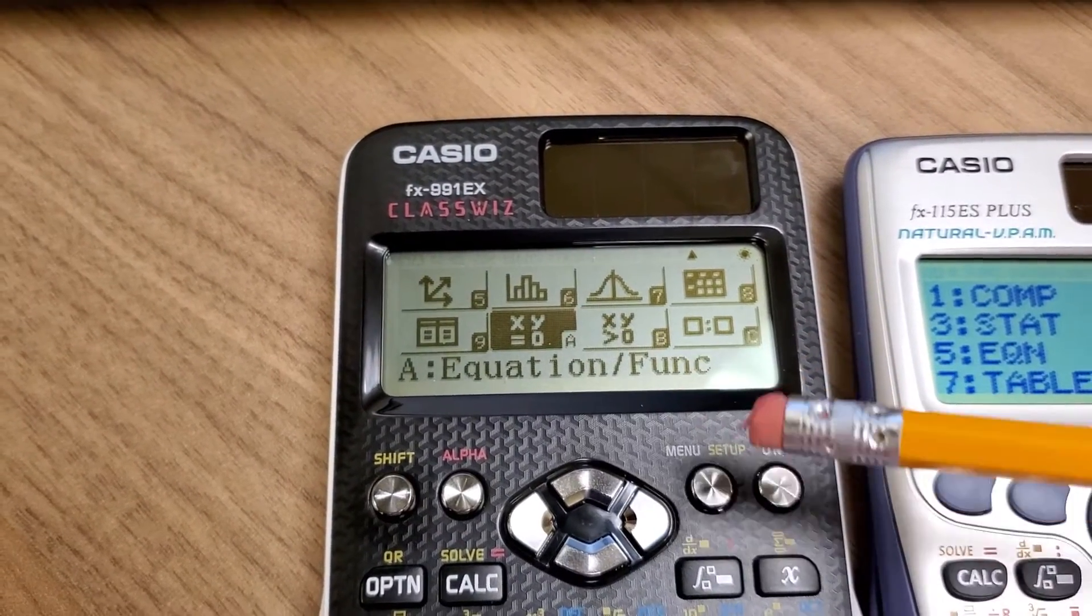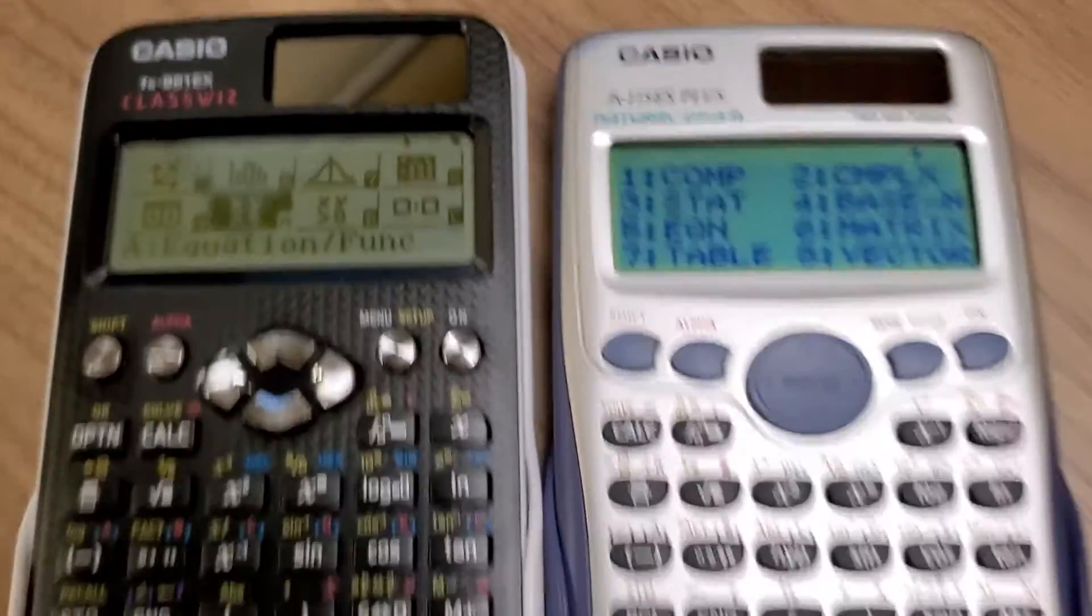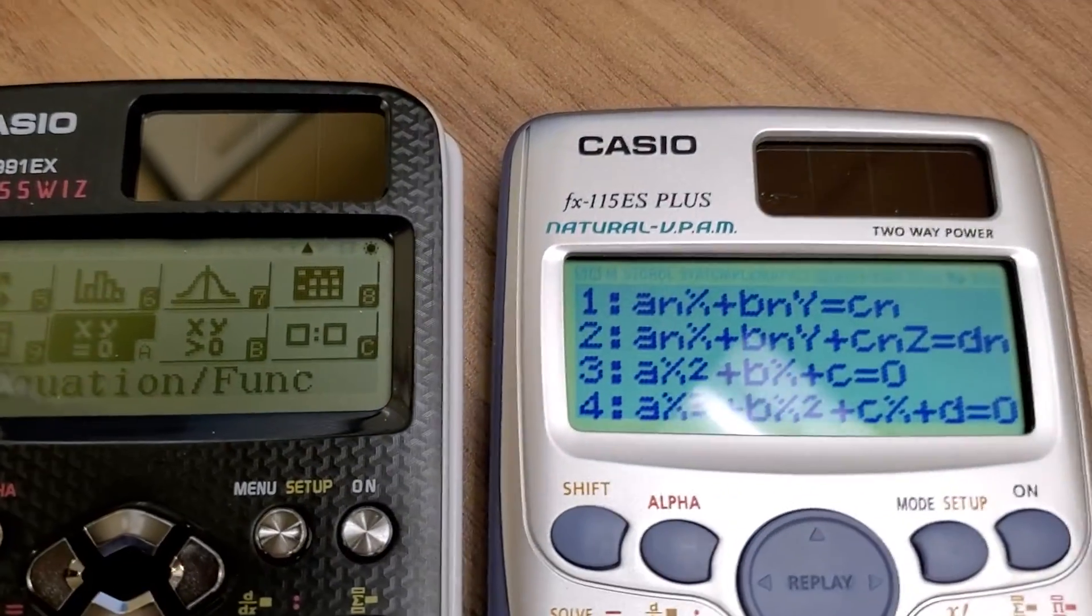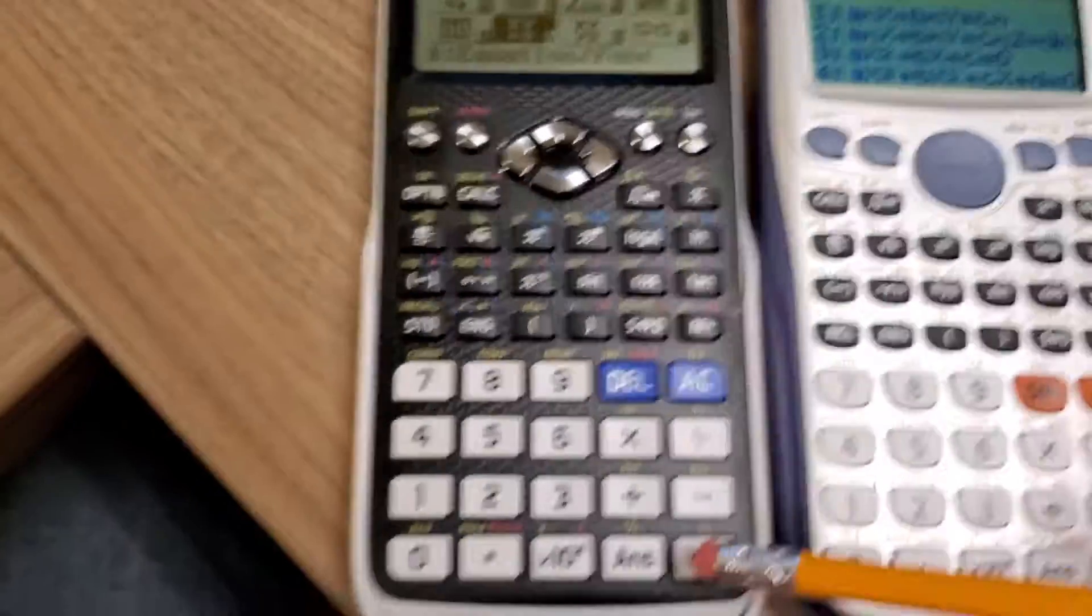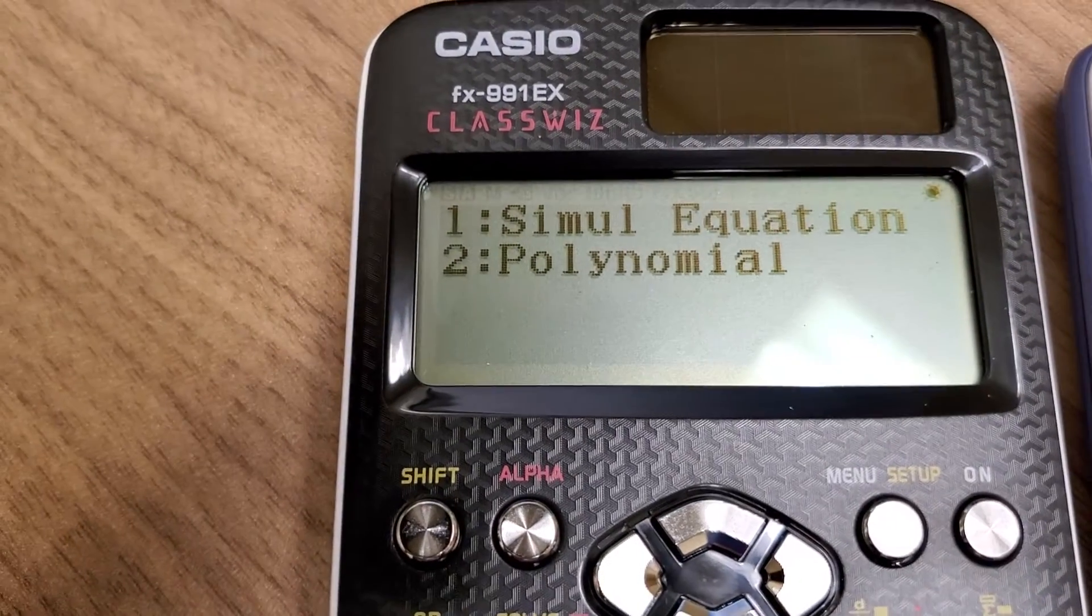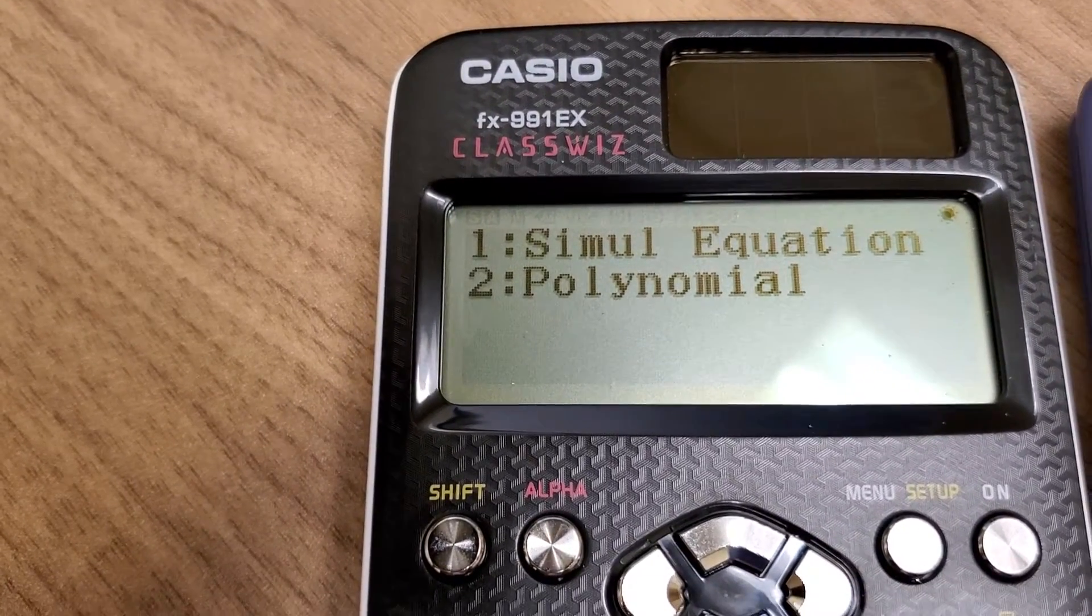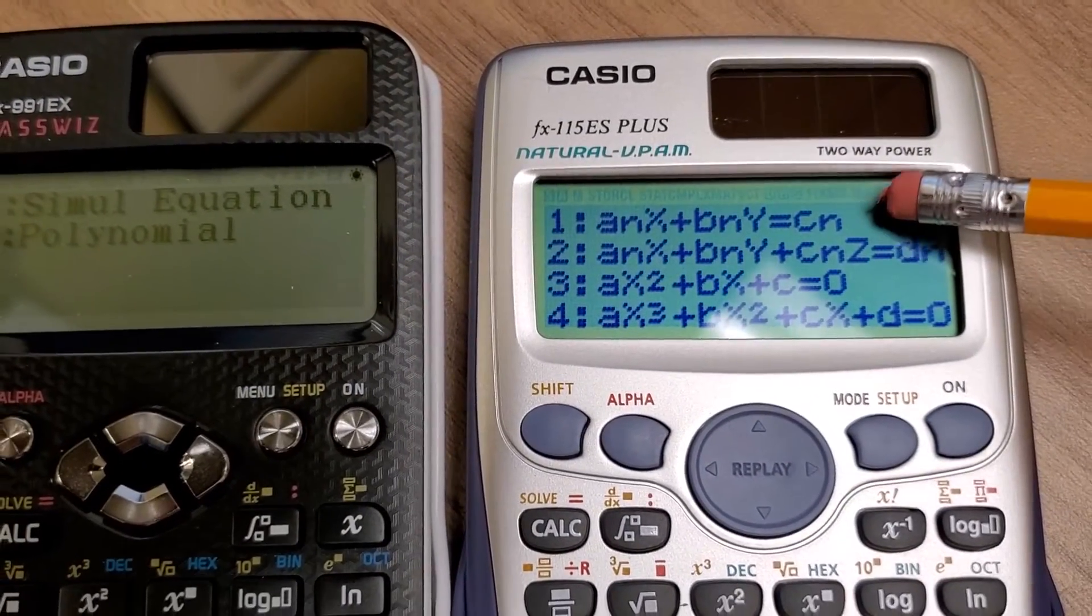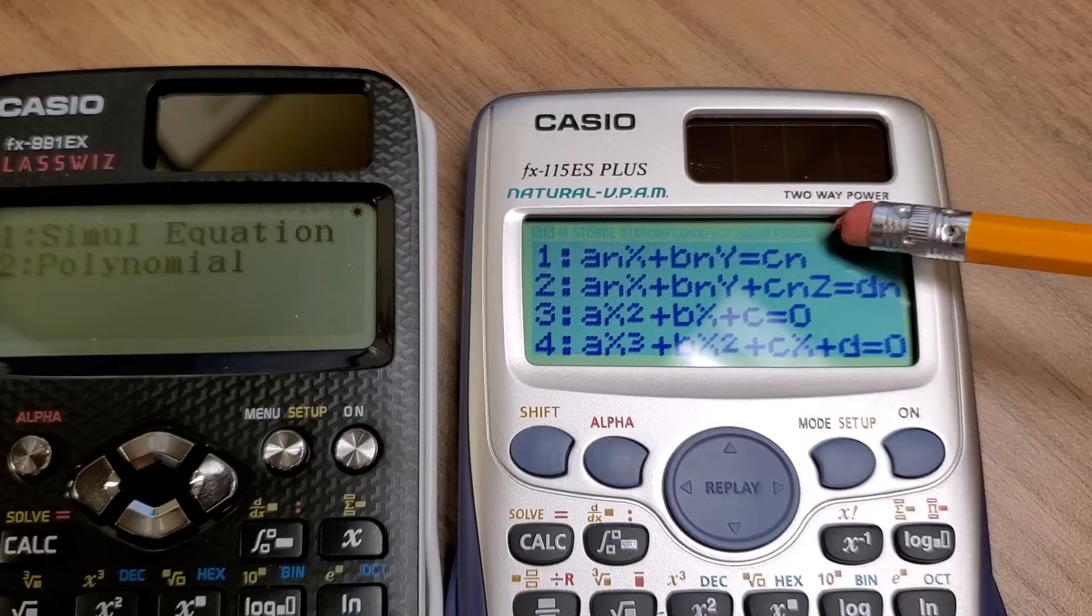So over here we have the equation function. If we do that on the FX-115ES Plus, that's going to be option number 5. So if we push number 5 on the keypad, you can see that we have options listed here. If we select over here by hitting the equal sign, it's going to make you choose: Do you want to do simultaneous equations, which would be systems of linear equations, or polynomial? On the FX-115ES Plus, you just have to go through and you have to choose. Do you want a system of linear equations? It will do a quadratic or a cubic, and these are the only four options.